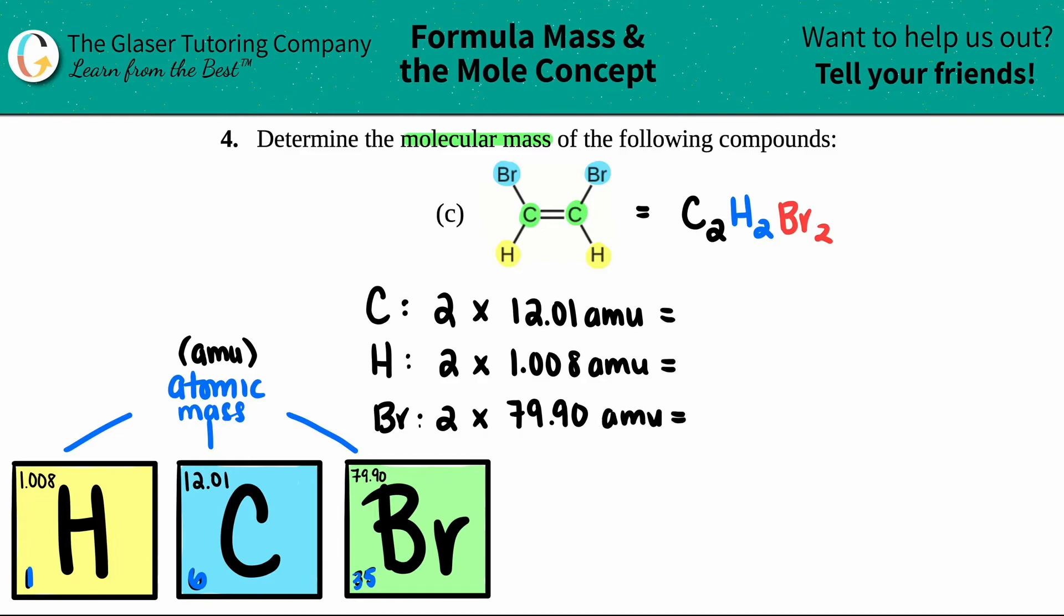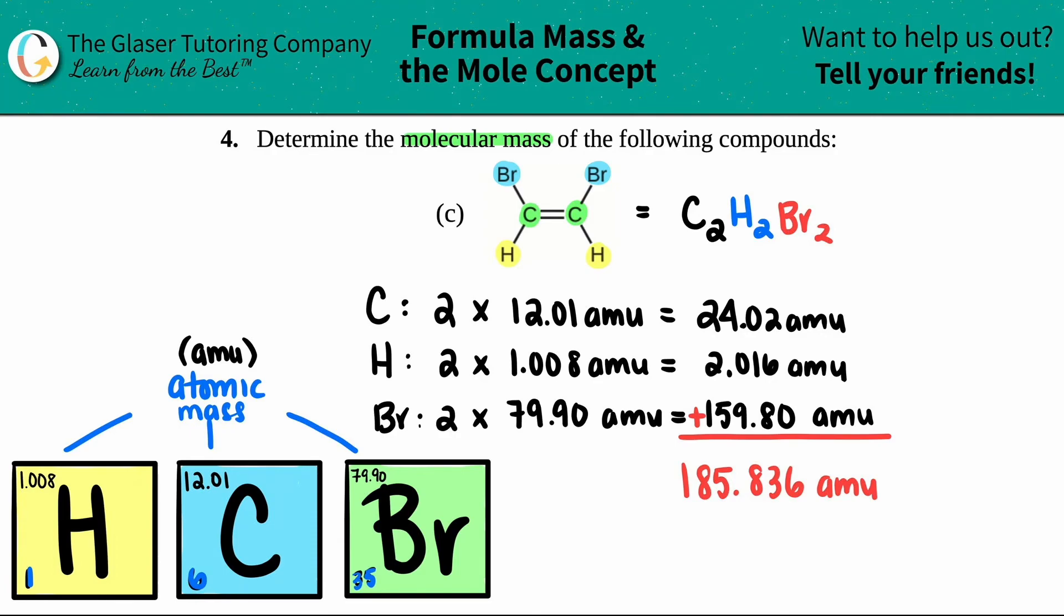So let's just quickly find out what those are. Two times 12.01 is 24.02 AMU. Two times 1.008 is 2.016 AMU. And then two times 79.90 is 159.80 AMU. And now what do we have to do if we want to find out the total mass? These are the masses of the individual elements, but if I want to find the total mass, yeah you got it—I just got to add them up. Good job. So let's just figure it out. 159.80 plus 2.016 plus 24.02, and I get a whopping 185.836 AMU. And that is your final answer. That's your molecular mass.